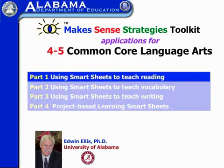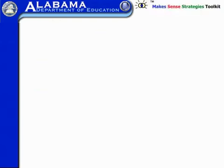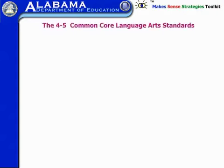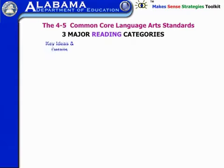So first let's take a look at reading and how those standards are set up. The Common Core language arts standards really reflect three major reading categories: key ideas and details, craft and structure, and integration of knowledge and ideas.